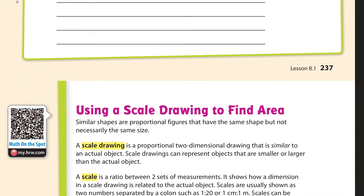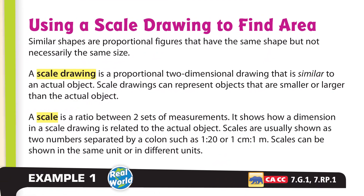Moving forward — scale drawings. A blueprint is a scale drawing; it's a proportion. Setting up a proportion — remember, a proportion is two equal fractions. Having 4/3 equals x/33, and x equals 44, that's a proportion. A scale tells you the ratio between two sets of measurements, like four inches to three feet — that was the scale right there.